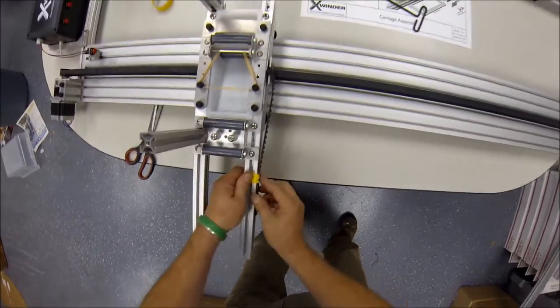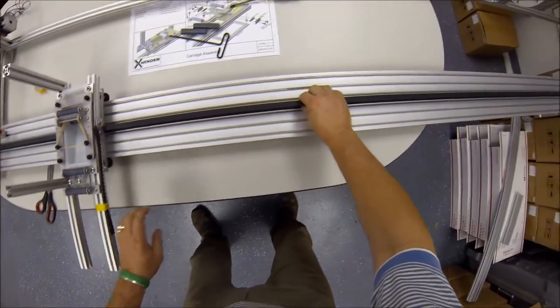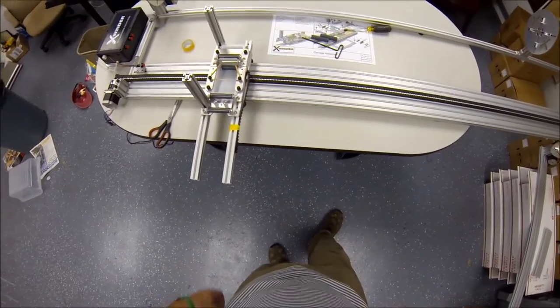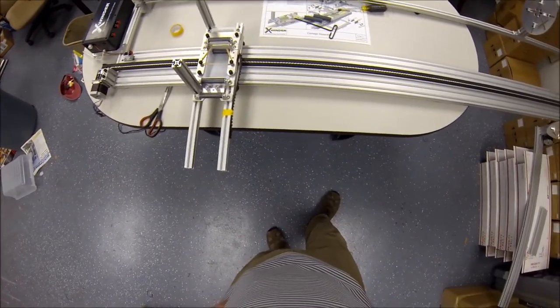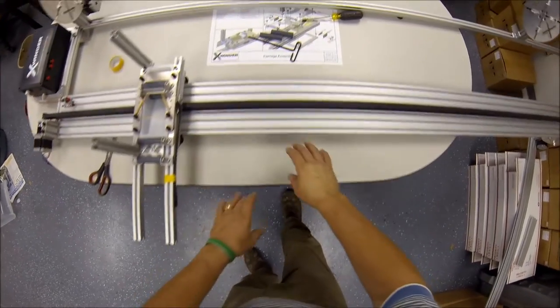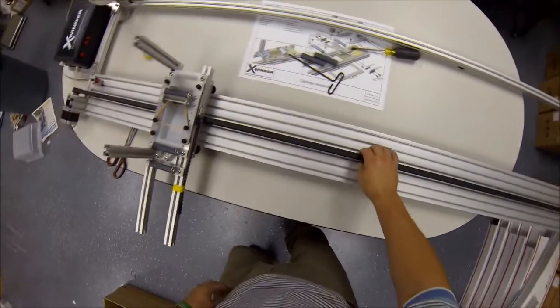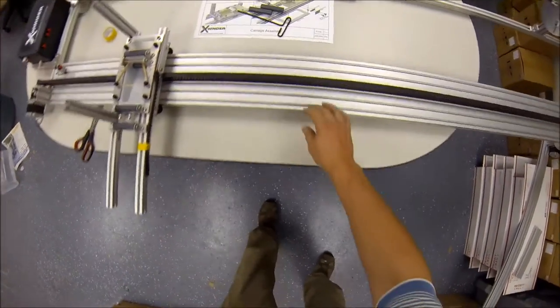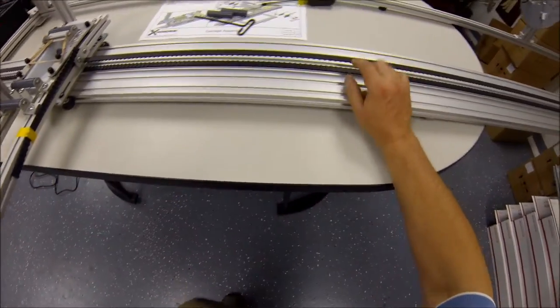Now, the length of the belt that ships with the kit is 18 feet. So 18 feet divided by 2 is 9, of course you need some excess. So in general, you can get an 8-foot long X-winder with the belt that ships that is 18 feet long. If you want to go longer or have a longer X-winder, you'll need to purchase additional L-belt.